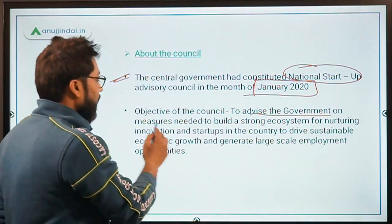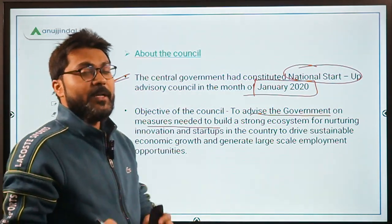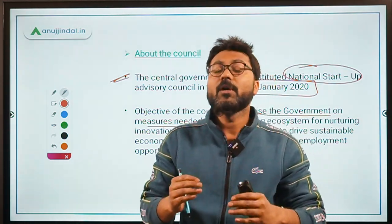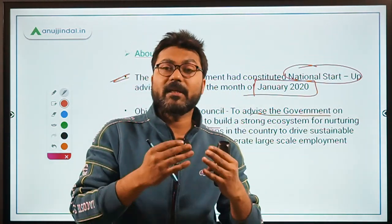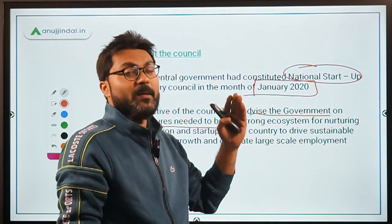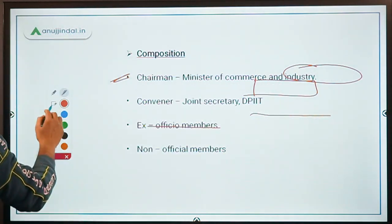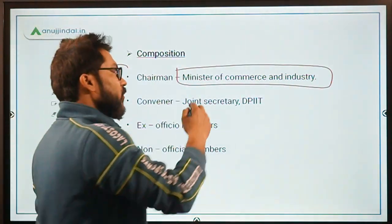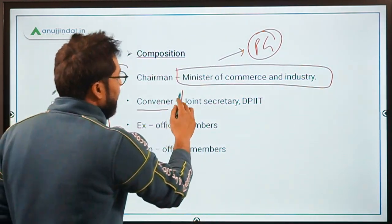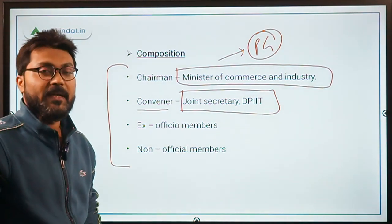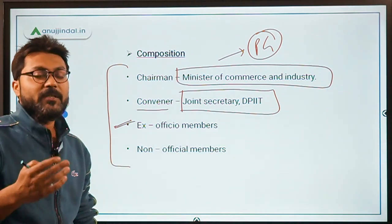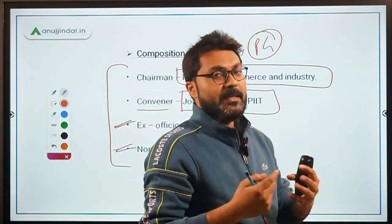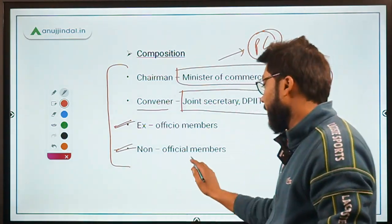The objective of the National Startup Advisory Council is to advise the government on measures needed to build a strong ecosystem for innovation and startups in India. Regarding its composition, it is chaired by the Union Minister of Commerce and Industry, currently Mr. Piyush Goyal. The conveyor is the Joint Secretary from the Department for Promotion of Industry and Internal Trade (DPIIT). There are ex-officio members from various ministries and non-official members nominated by the central government for a period of two years.